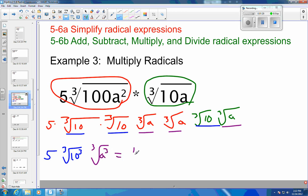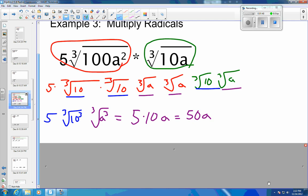From there, I can reduce it, so the 5 is just a 5, the cube root and the cubing basically cancel, so that's times 10, and the cube root and the cube cancel, and that's times A. So final answer would be 5 times 10 is 50A. So that big monstrosity simplifies down to 50A.